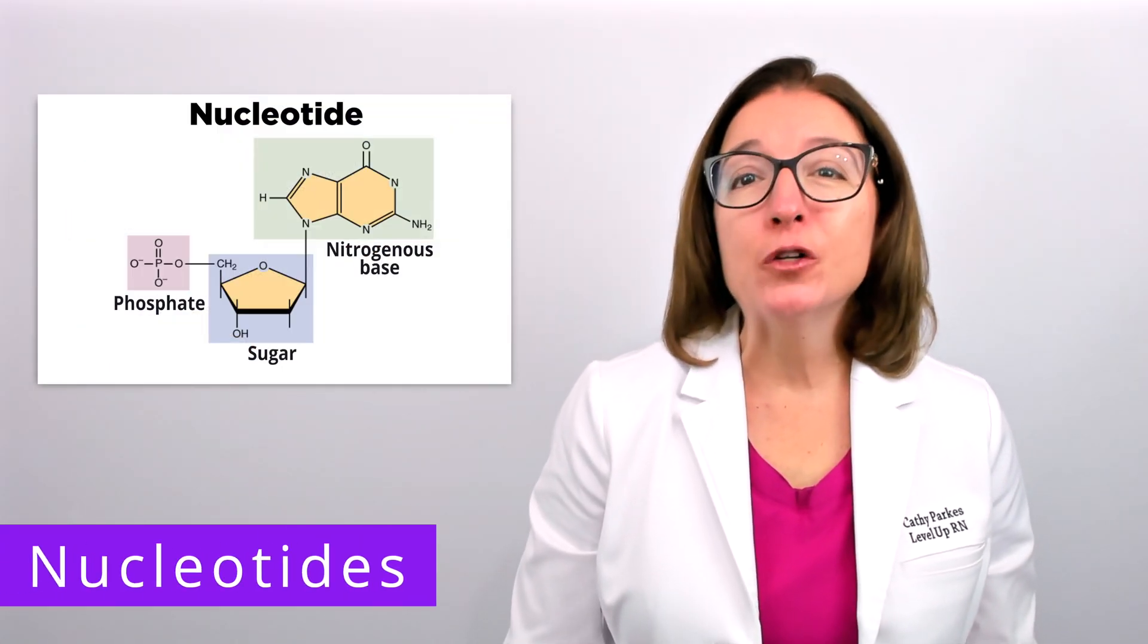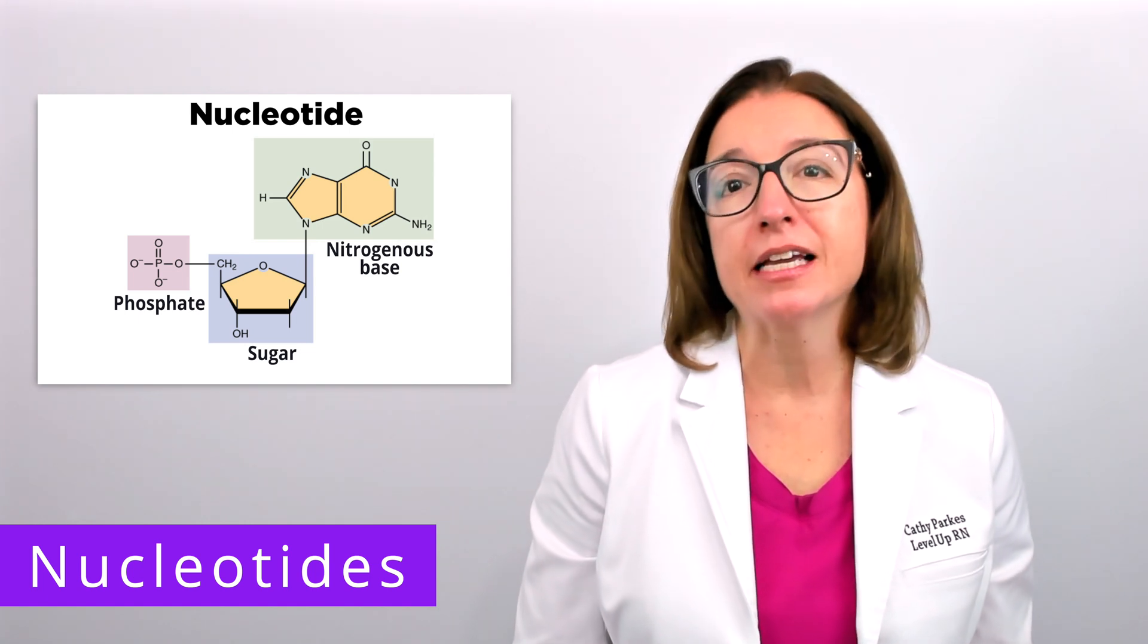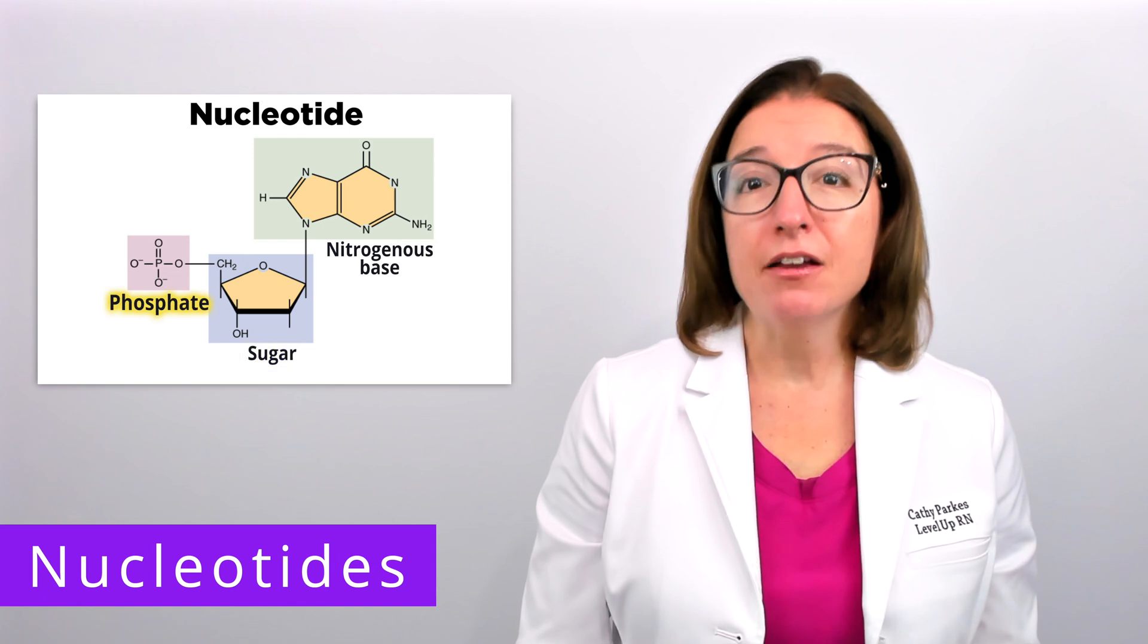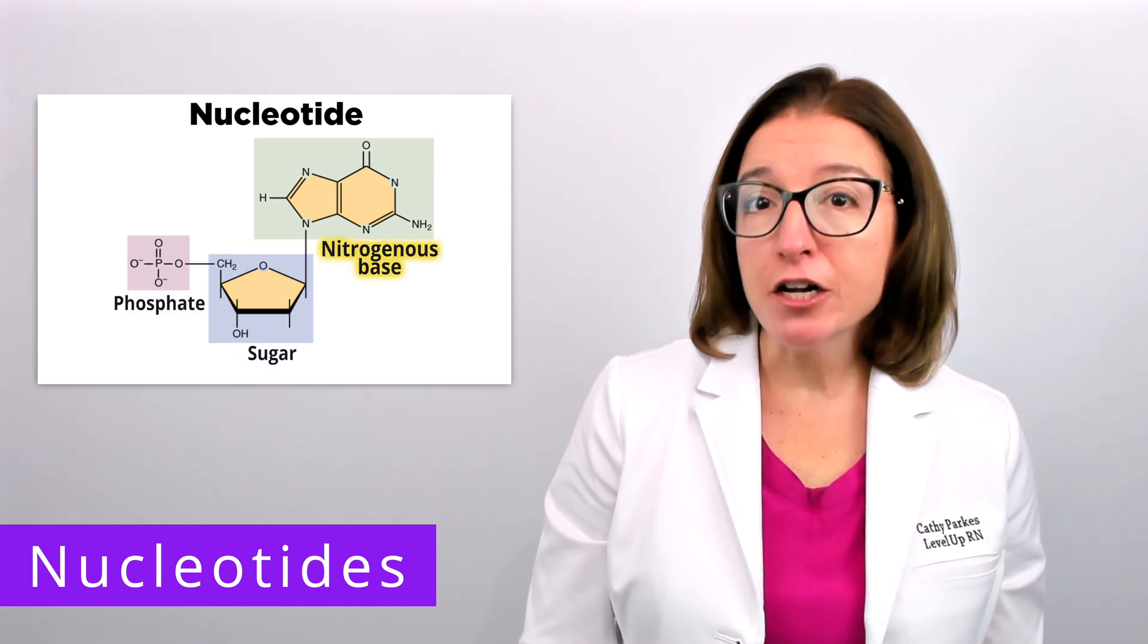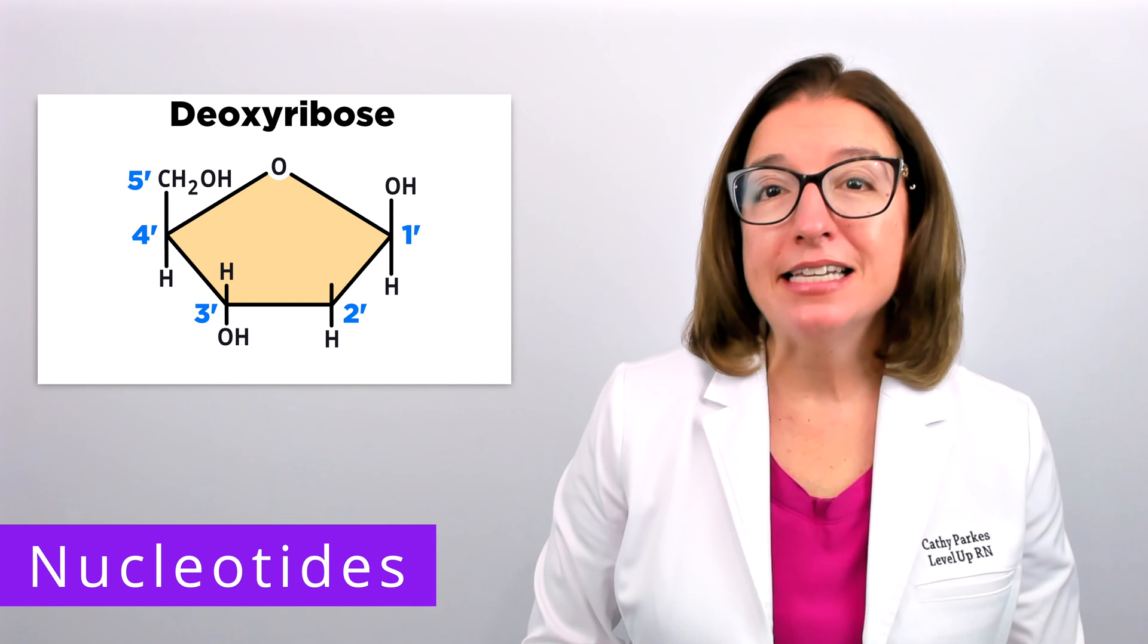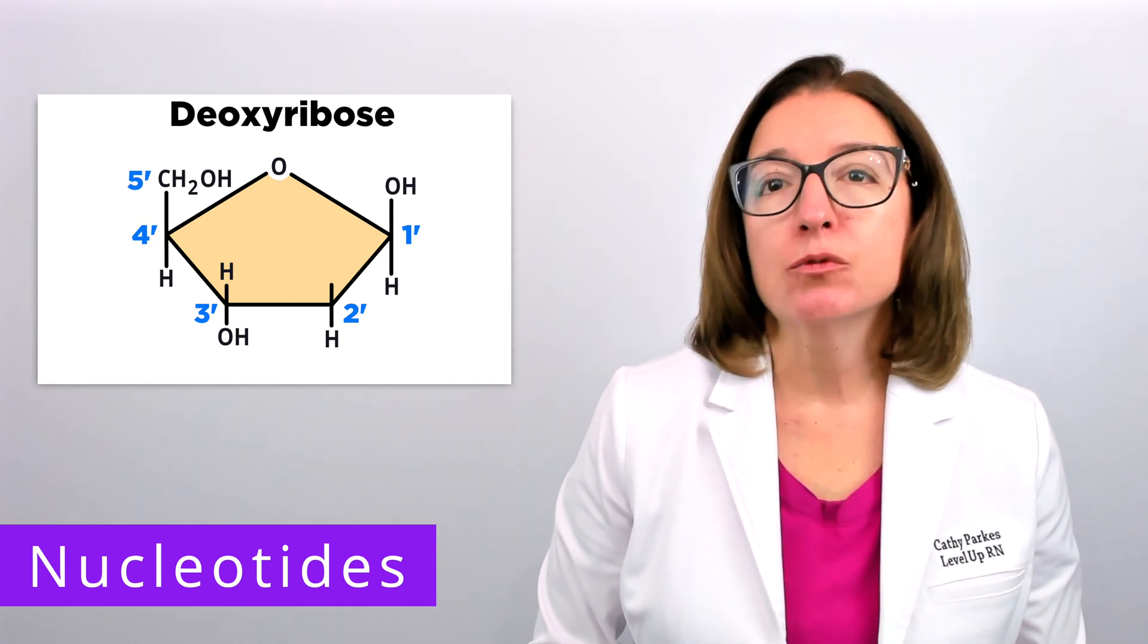DNA is a nucleic acid, and nucleotides are the building blocks of nucleic acids. Each nucleotide is composed of a 5-carbon sugar, a phosphate group, and a nitrogenous base. In DNA, the 5-carbon sugar is deoxyribose, whereas in RNA, the 5-carbon sugar is ribose.